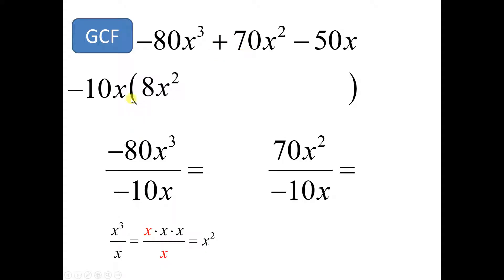Now when I divide 70x² by negative 10, I get negative 7x. That's my second term. And when I divide negative 50x by negative 10x, I get positive 5. That's my last term.